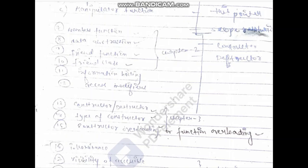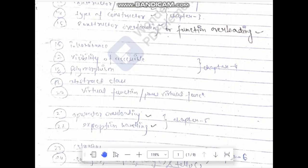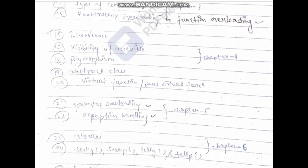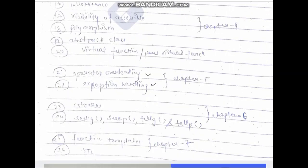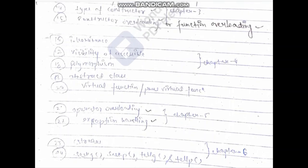Other important topics include: function, data abstraction, friend function, friend classes, information hiding, access modifiers, constructor, and destructor. These are the important brain of this subject, so don't miss out. Also, types of constructor, constructor overloading, and function overloading — don't miss out please. Enhanced visibility, accessibility, abstraction classes, virtual functions, and operator overloading are also covered.